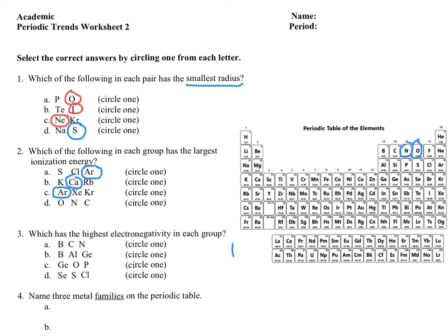For oxygen, nitrogen, and carbon: as you go to the right, atomic radius decreases in size. So oxygen would be the smallest, meaning it's the hardest to pull an electron off of, and it would have the highest ionization energy.